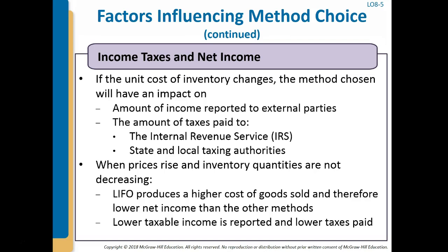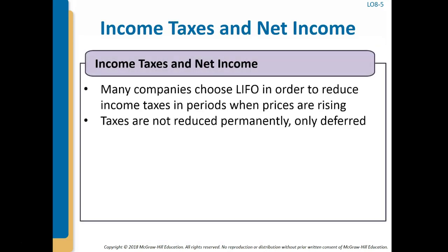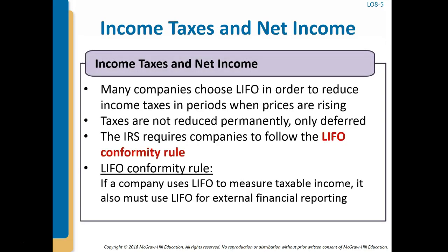When prices rise and inventory quantities are not decreasing, LIFO produces a higher cost of goods sold, and therefore a lower net income than the other methods. The company's income tax returns will report a lower taxable income using LIFO, and lower taxes will be paid currently. These taxes aren't reduced permanently, but they are only deferred.